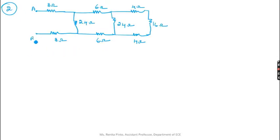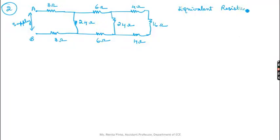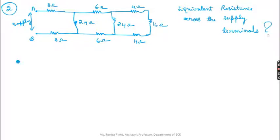For the second problem, a circuit is given with terminals A and B, and you have to find the equivalent resistance across the supply terminals. Looking at the circuit, you can see that 4Ω, 16Ω, and 4Ω are in series.